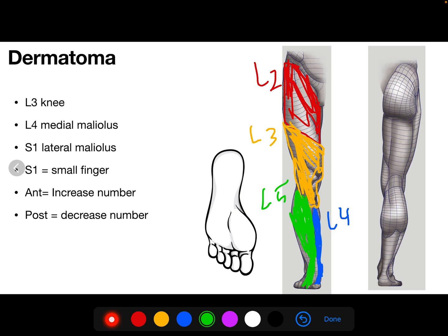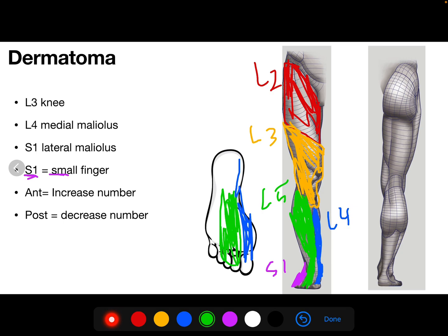Regarding the small toe, that will be S1 — the small finger is S1. On the foot, the middle part will be L4, the area from the middle to halfway across the foot will be L5, and the lateral part will be S1.